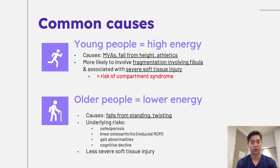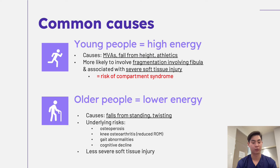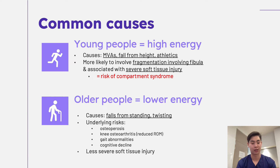With regards to older people, fractures are generally from falls — either from standing or twisting — and so these are lower energy mechanisms. There can be underlying risk factors for people more predisposed to tibial fractures, including osteoporosis, knee arthritis due to reduced range of motion, and gait abnormalities from cognitive decline. Because of the lower impact, we'll obviously see less severe soft tissue injury associated with it too.